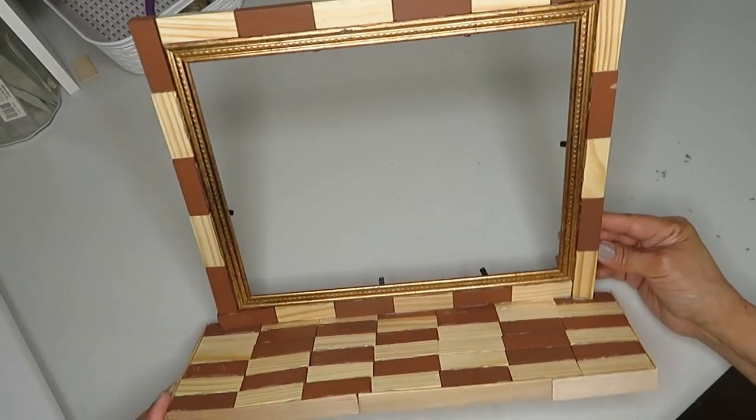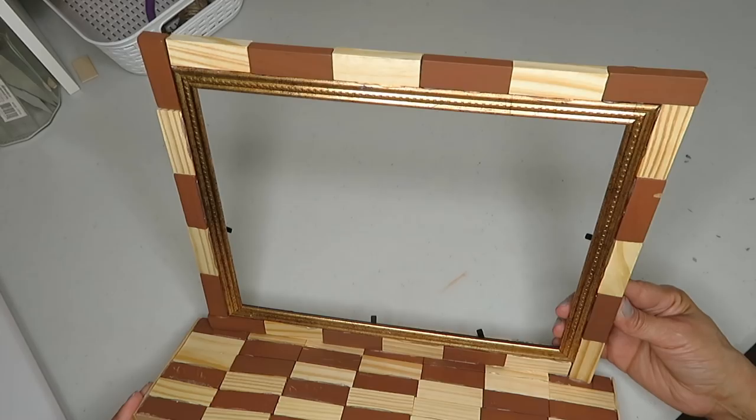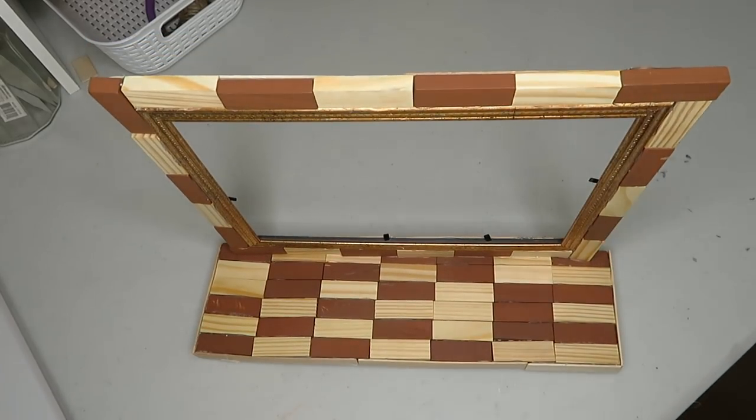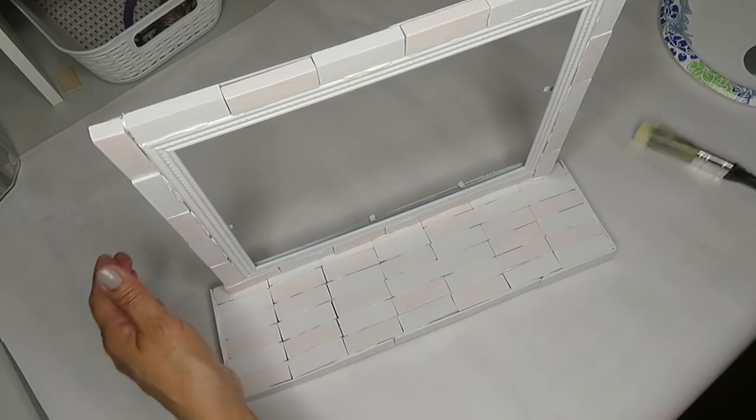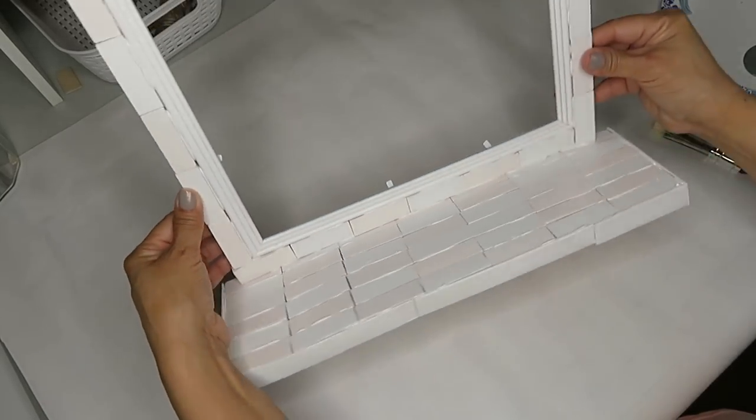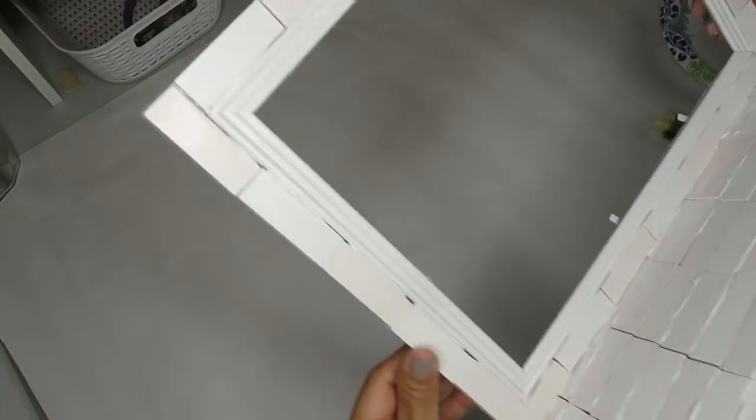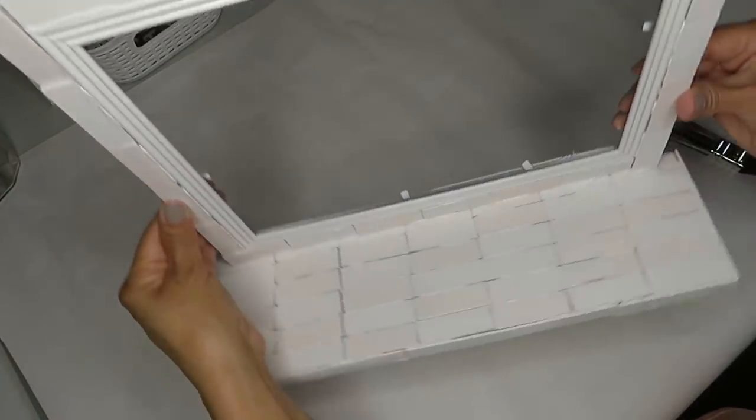Now my project is ready for me to go spray paint it. I'm gonna take it outside and do that and then bring it inside once the paint is dry and we'll finish off this project. Three hours later and my paint is completely dry. Now I'm going to add some gray paint to make it look rustic and distressed.